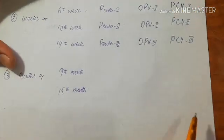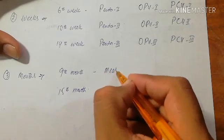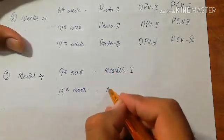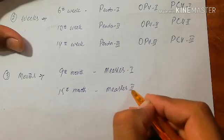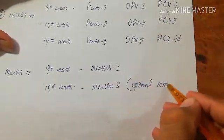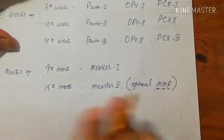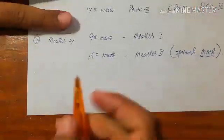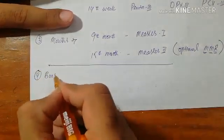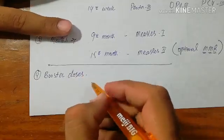Most diseases are covered except measles, which is given at nine months as the first dose. The second dose of measles is given at 15 months. Optionally, the MMR vaccine is given instead of the measles vaccine, which covers measles, mumps, and rubella.